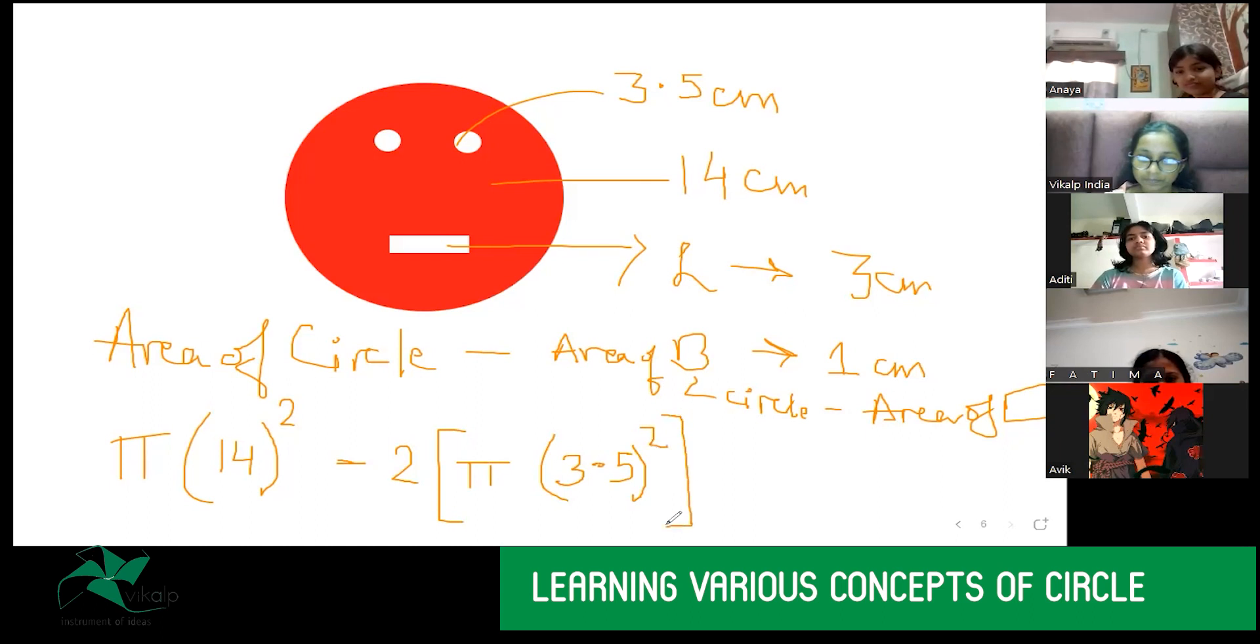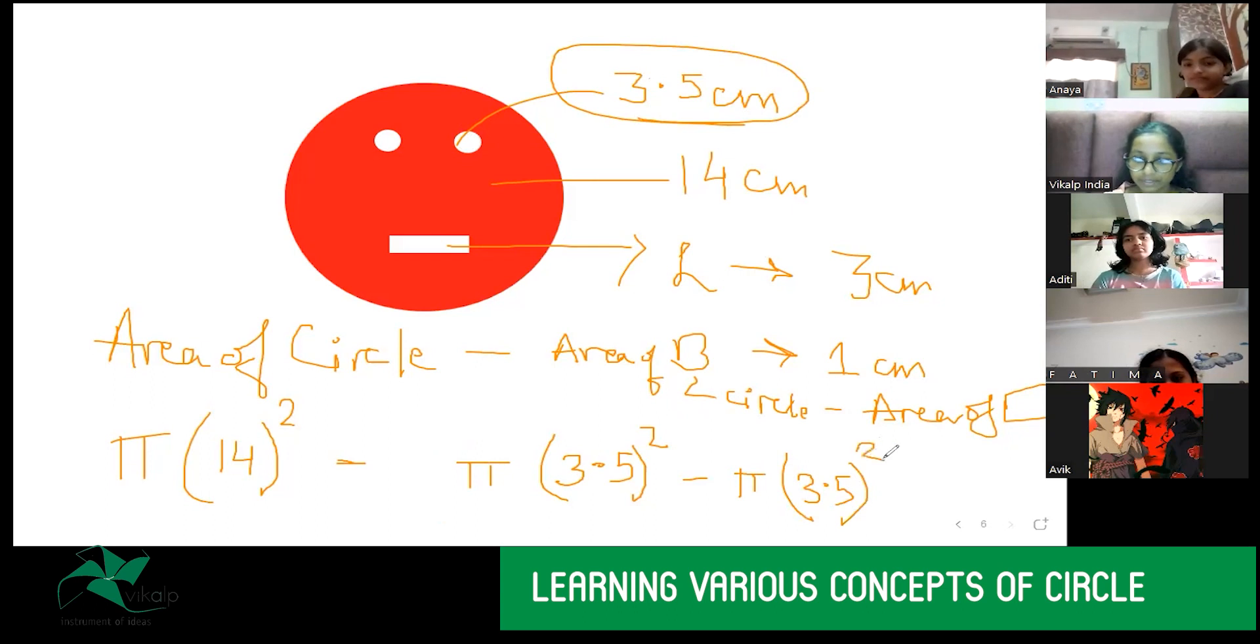Can I write as two times pi 3.5 square? Yes. All right. This is the area of the one small circle because its radius is 3.5 centimeter. So, pi r square. Yes, honey. This is the area of first circle. Area of second circle will also be pi r square. Yes, honey. Right.